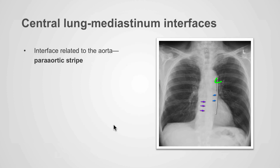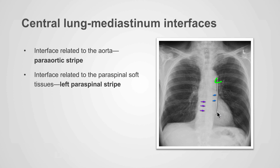There are several central lung mediastinal interfaces. The interface related to the aorta is called the periaortic stripe, represented by the white line. The interface related to the paraspinal soft tissues is called the left paraspinal stripe, highlighted with the blue arrows.